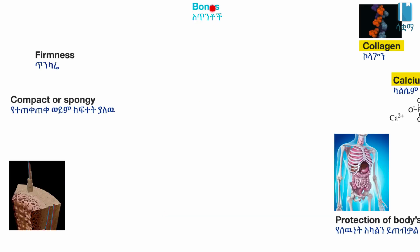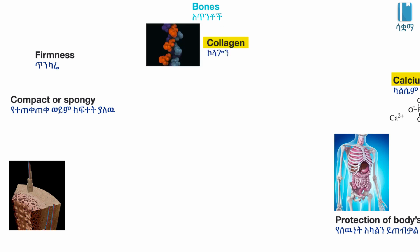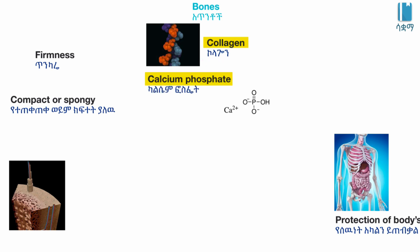Bones are rigid structures. Our bones are composed of collagen and calcium phosphates, which are minerals. These are the same as connective tissue.